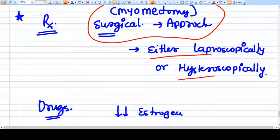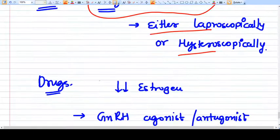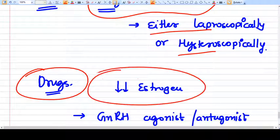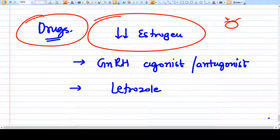It can be done either hysteroscopically or laparoscopically depending on access to the fibroid. Some drugs that decrease estrogen can also shrink the fibroid. The fibroid cannot go away, it can be shrunk. As I already told you, there should be long-term estrogen effect to develop a fibroid, so we need to give drugs that cause long-term estrogen suppression.